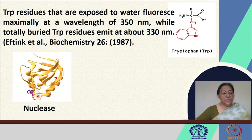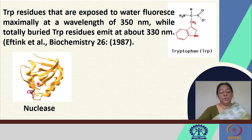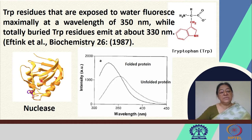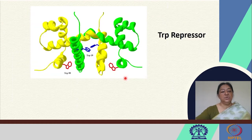For example, if we look at the tryptophan in the nuclease protein, we see where it exists in the folded protein. If we do an experiment where we unfold the protein, we can observe that the tryptophan emission intensity has red-shifted for the unfolded protein, as shown in this spectrum. This can also lead us to identification of locations of important tryptophan residues.